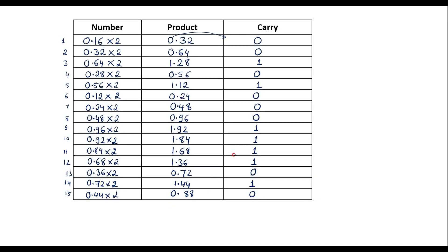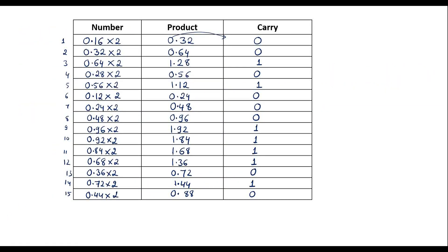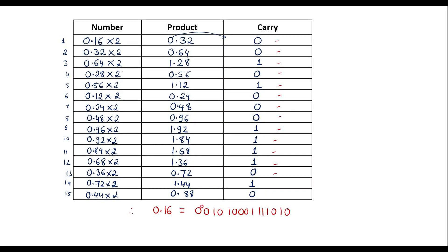Now we consider only the carry values from top to bottom, which gives the Q15 representation of 0.16. Therefore, 0.16 in Q15 is: 0.0010 1001 1110 1 — reading the carries collected: 0, 0, 1, 0, 1, 0, 0, 1, 1, 1, 1, 1, 0, 1, 1.